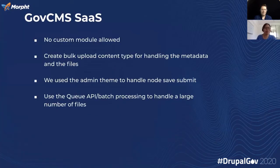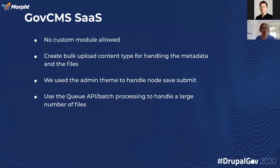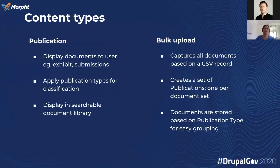Well, thank you Andre. GovCMS says no custom modules are allowed. Therefore, we create a bulk upload content type to handle the metadata and files. Then we use the admin theme to handle the node save feature, so we can create batch processing for large files. As for content types, we created two: publication and bulk upload. In publication, we display documents to the user — for example, exhibit, submission, etc. — and we apply publication type for classification, displayed in a searchable document library.